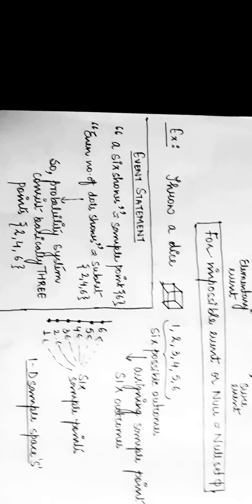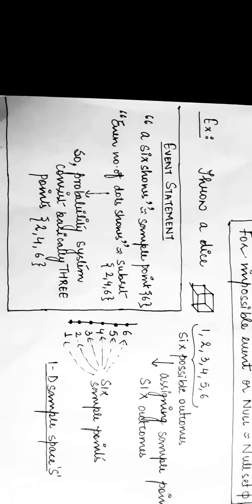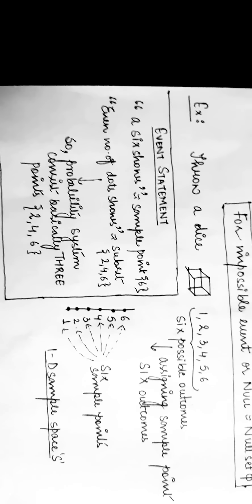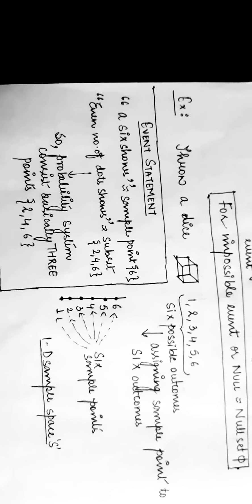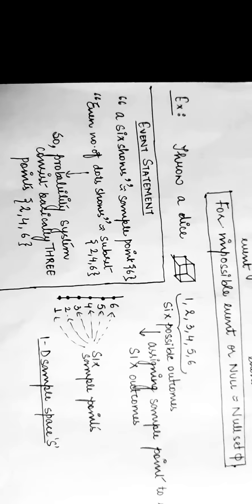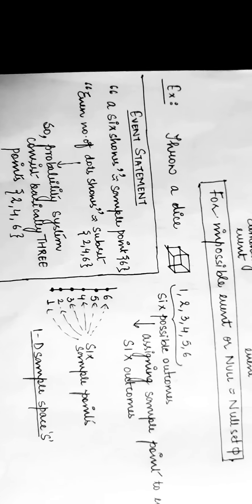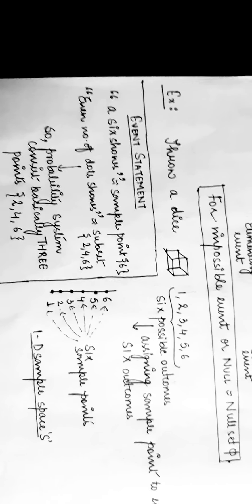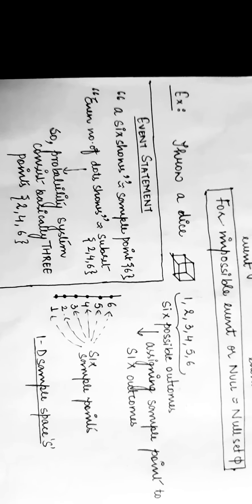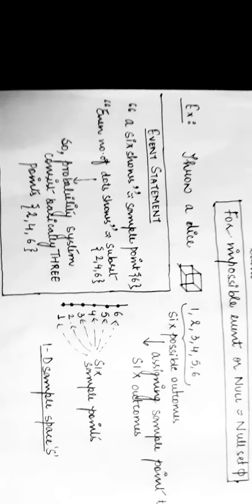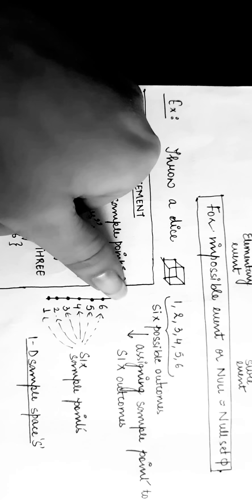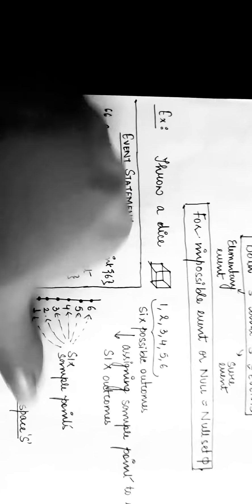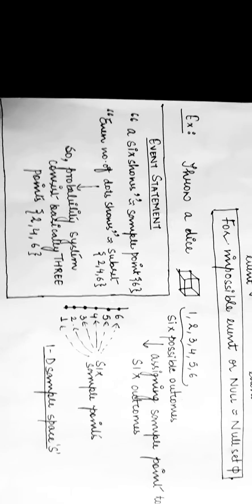With the help of an example, we can easily understand: if we throw a dice, how many possible outcomes will we have? 6 only — that is 1, 2, 3, 4, 5, and 6. We will be assigning a sample point to each of the 6 outcomes. We can represent this in the form of a 1D sample space, assigning all 6 sample points on a one-dimensional sample space S.